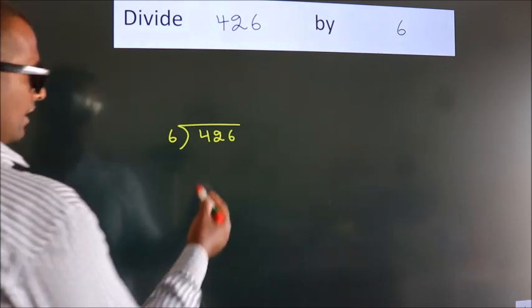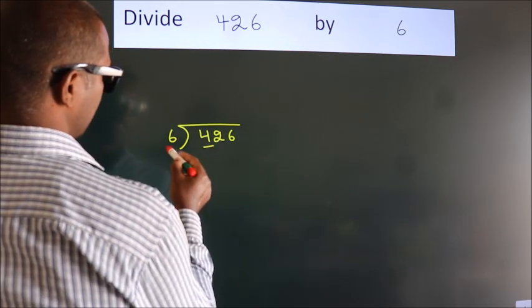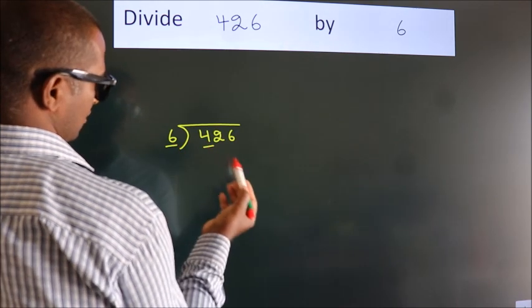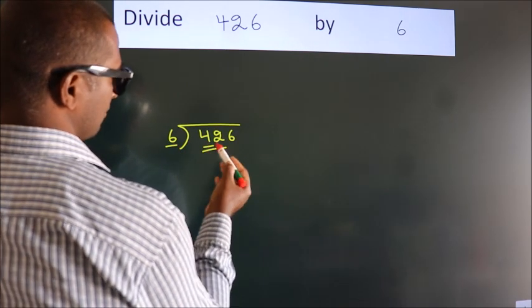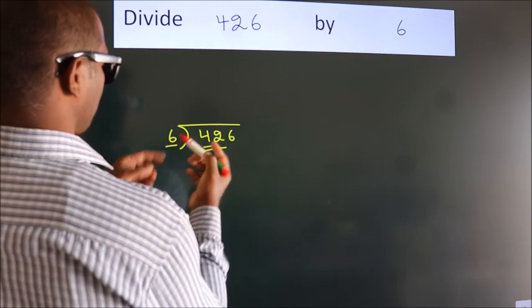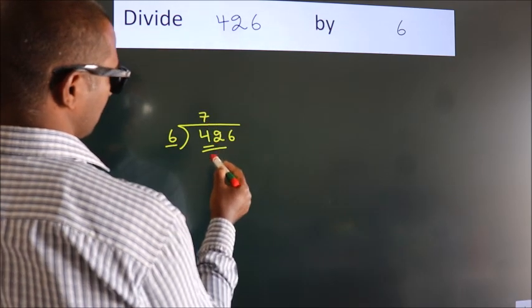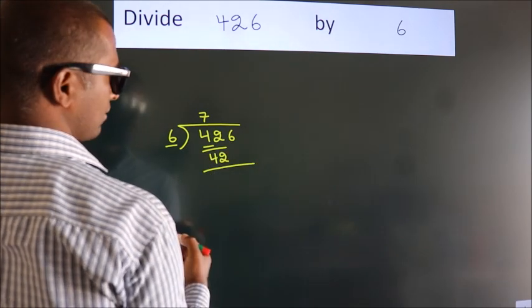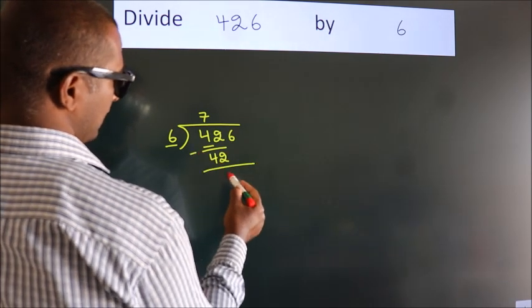Next. Here we have 4, here 6. 4 is smaller than 6, so we should take 2 numbers, 42. When do we get 42? In 6 table, 6 7s, 42. Now we should subtract, we get 0.